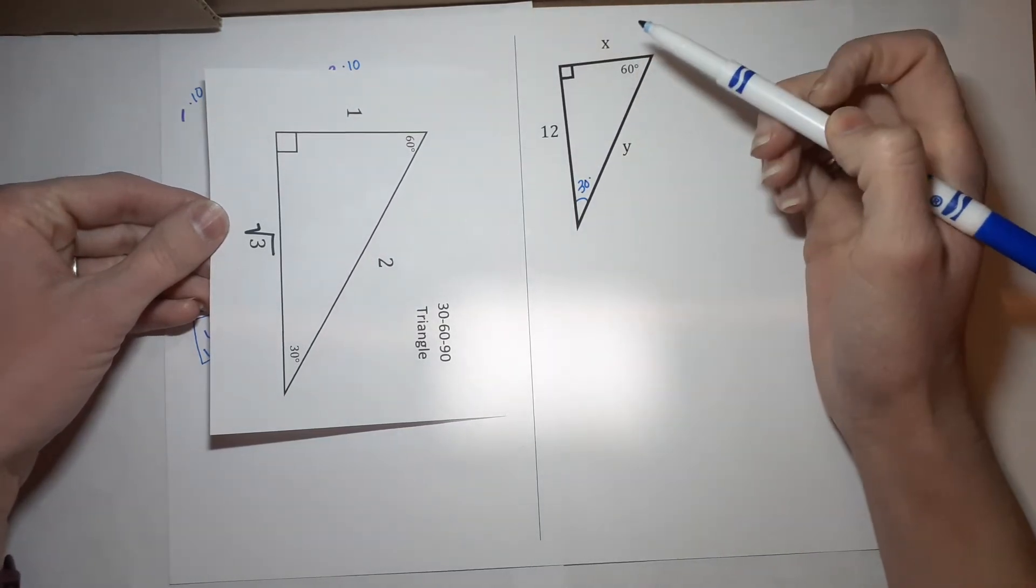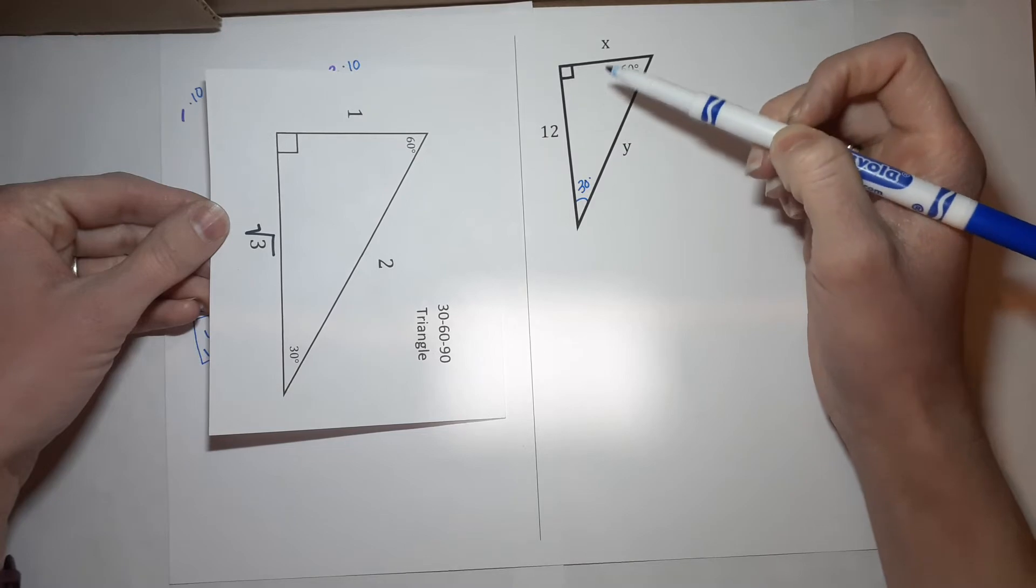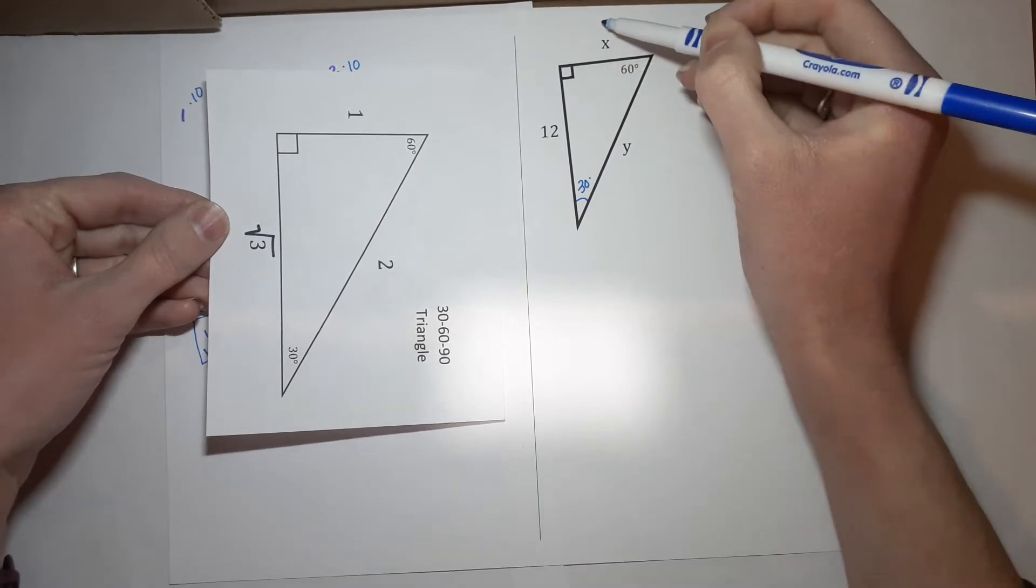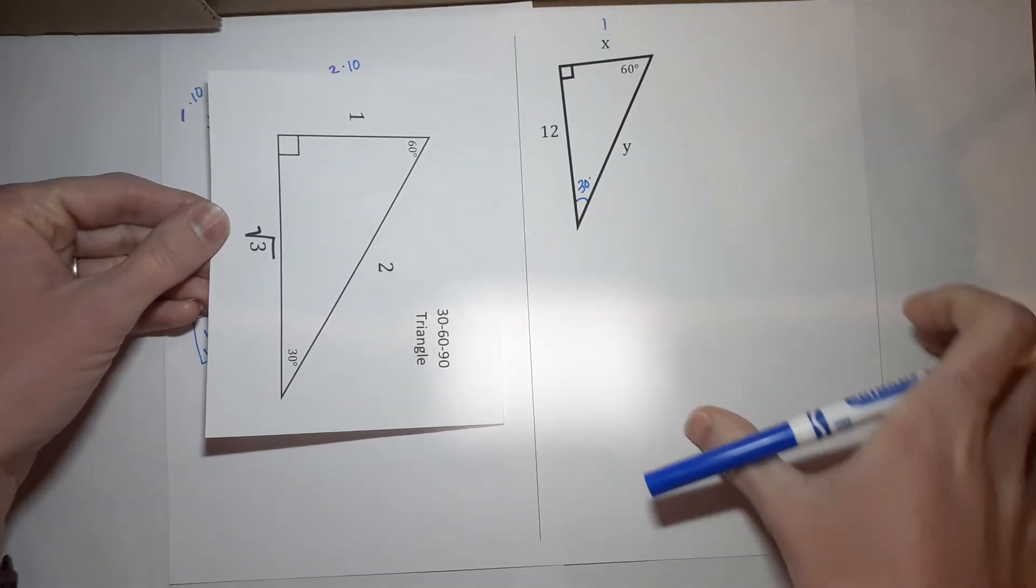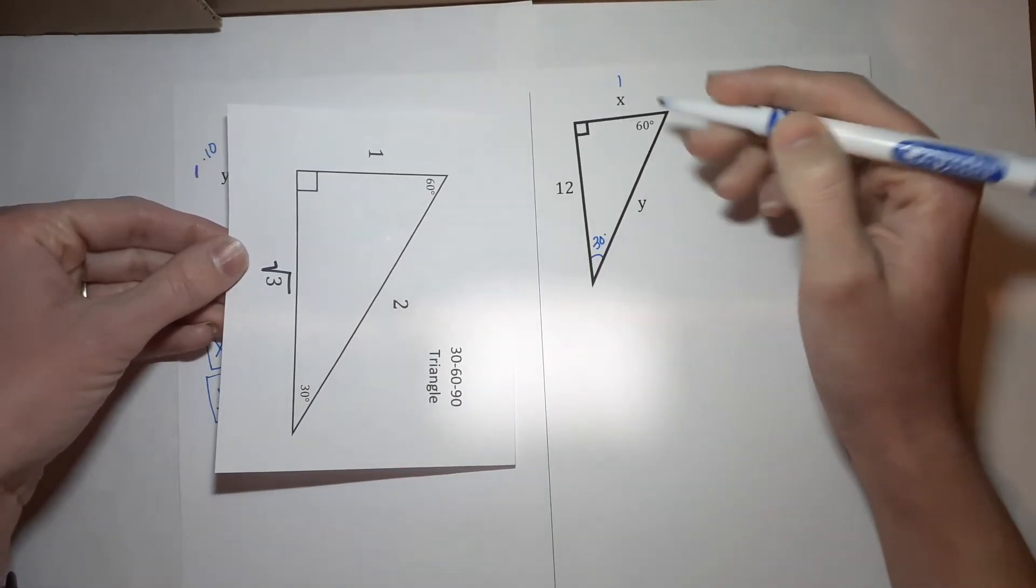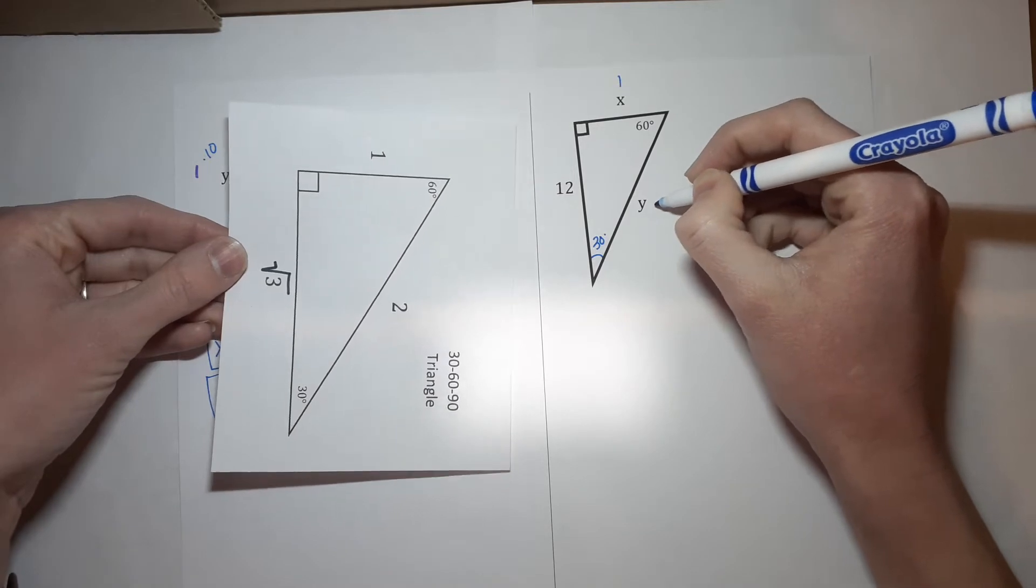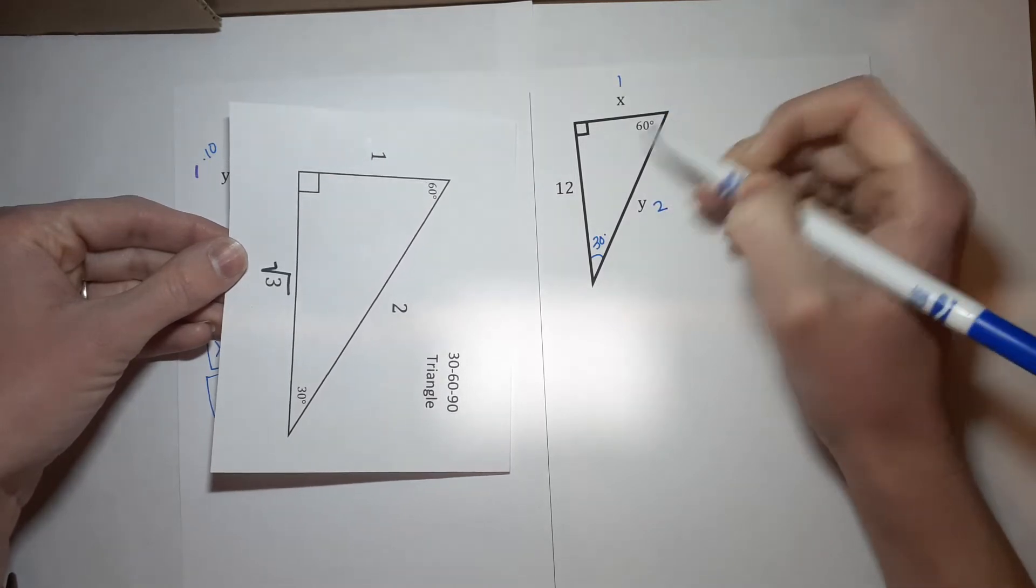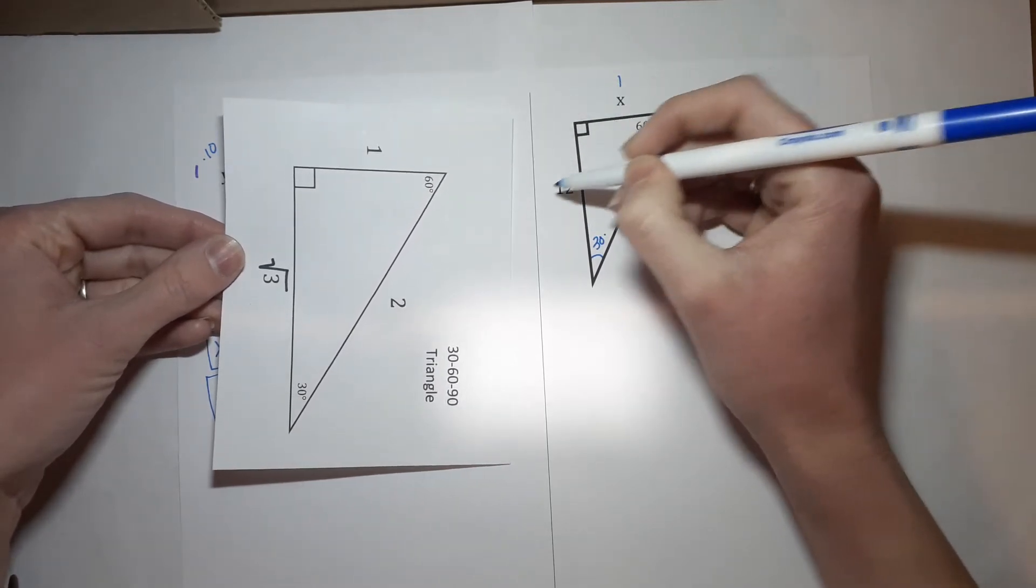Now, the one across from 30 is related to 1 in a special way. They are buddies. The one across from the 90 degrees, the hypotenuse, is 2, related to 2. And the one across from the 60 is related to the square root of 3.